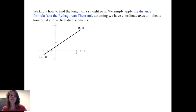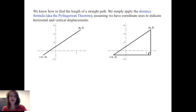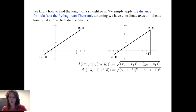So if I want to find the length of the segment connecting points (−3, −1) and (6, 5), I simply think of that segment as the hypotenuse of a right triangle and apply the Pythagorean theorem, taking the square root of the square of the horizontal displacement plus the square of the vertical displacement. Doing so, I get the square root of 117, which is 3 times the square root of 13.